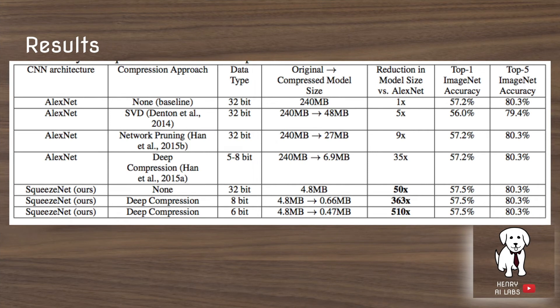The most interesting result in the paper shows SqueezeNet achieving a very small model size compared to prior methods. The top techniques start from AlexNet and compress it with singular value decomposition, network pruning, or the prior state-of-the-art deep compression. When combining SqueezeNet with deep compression — a combination of pruning, quantization with a codebook, and Huffman encoding — they reduce the model to 0.47 megabytes using 6-bit weights without losing any ImageNet accuracy.